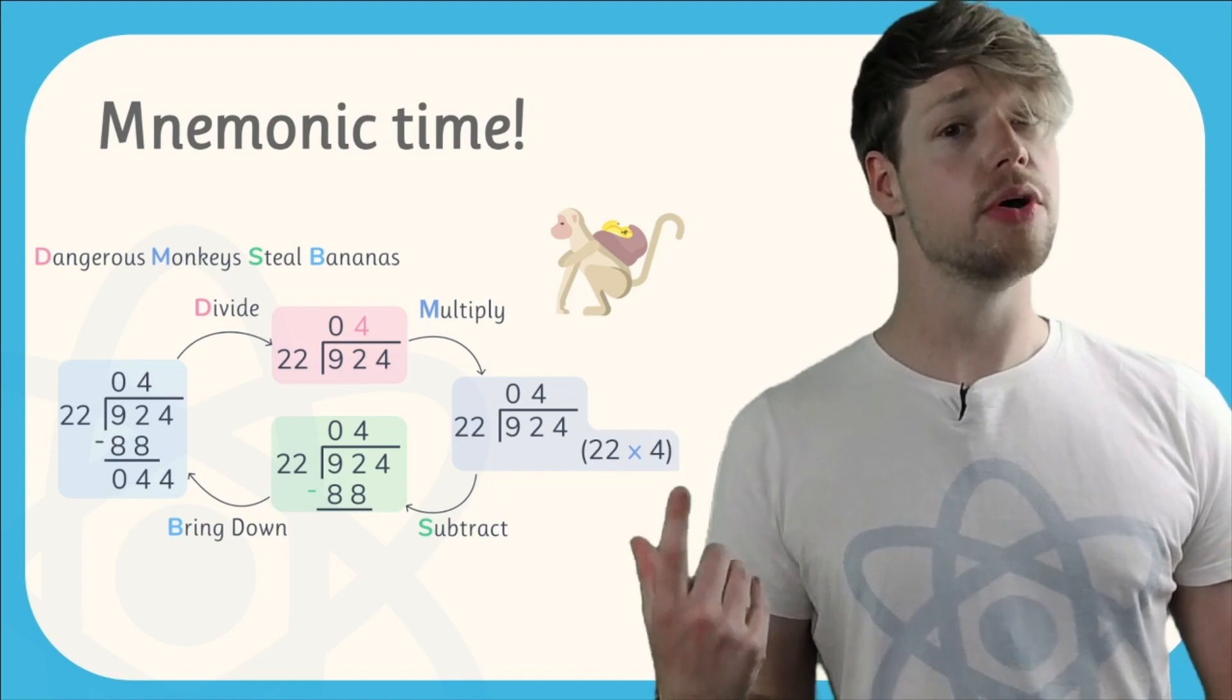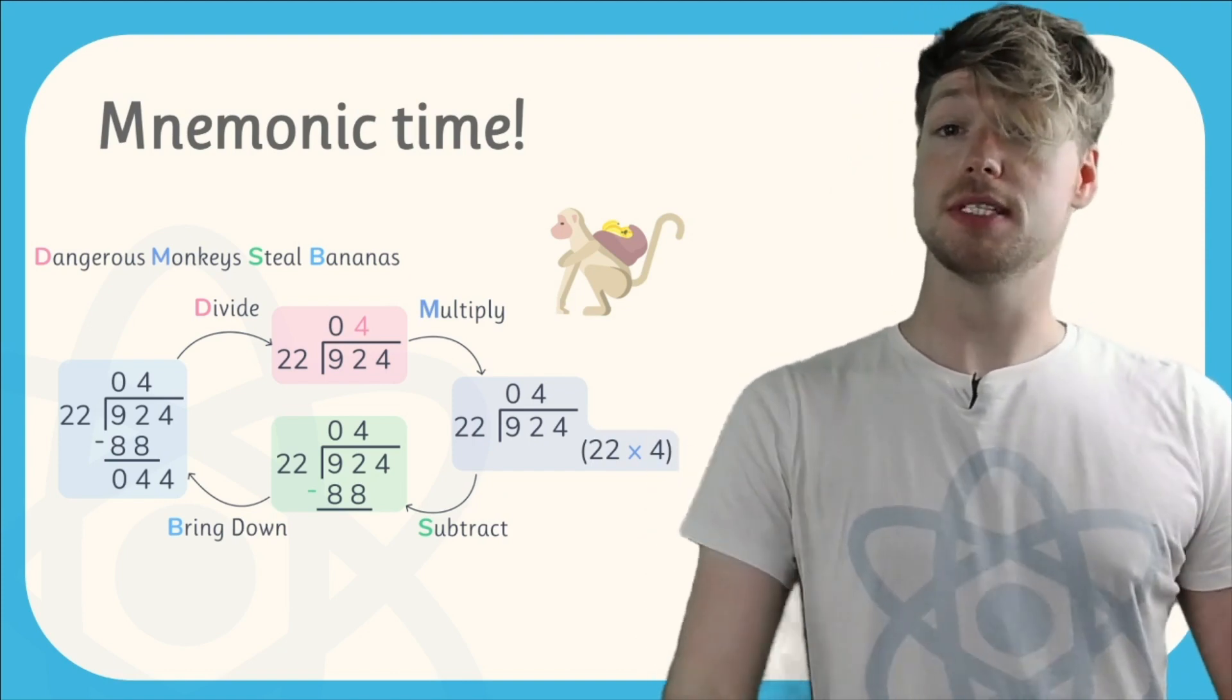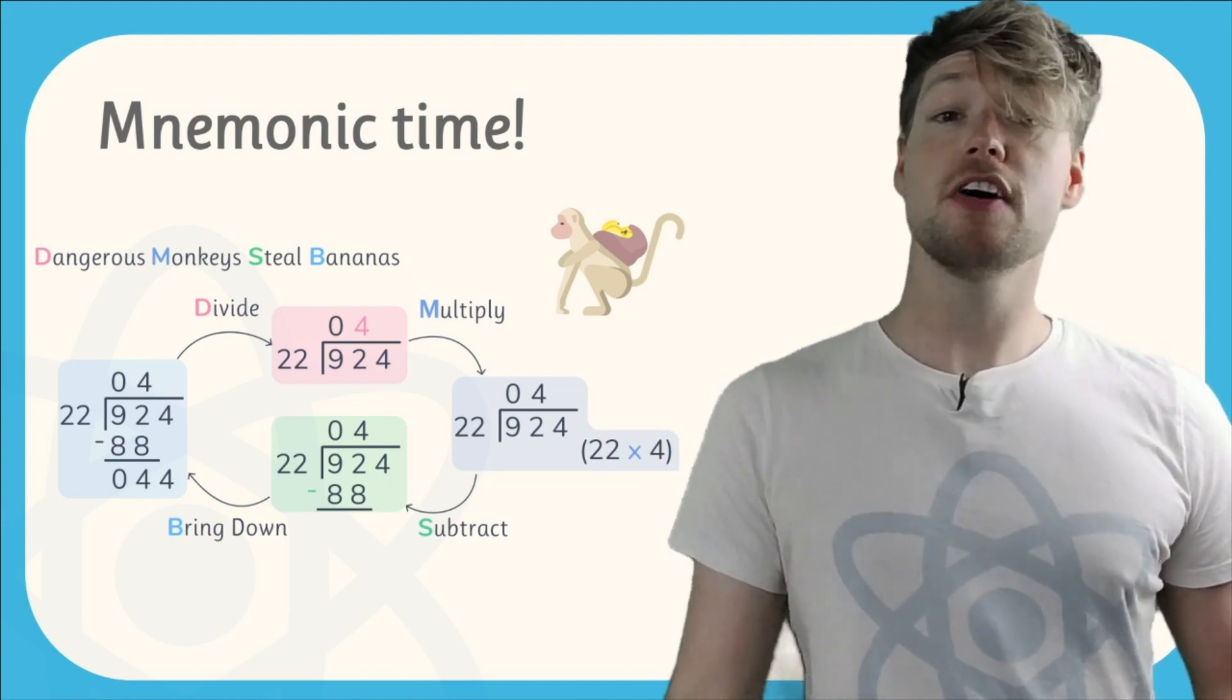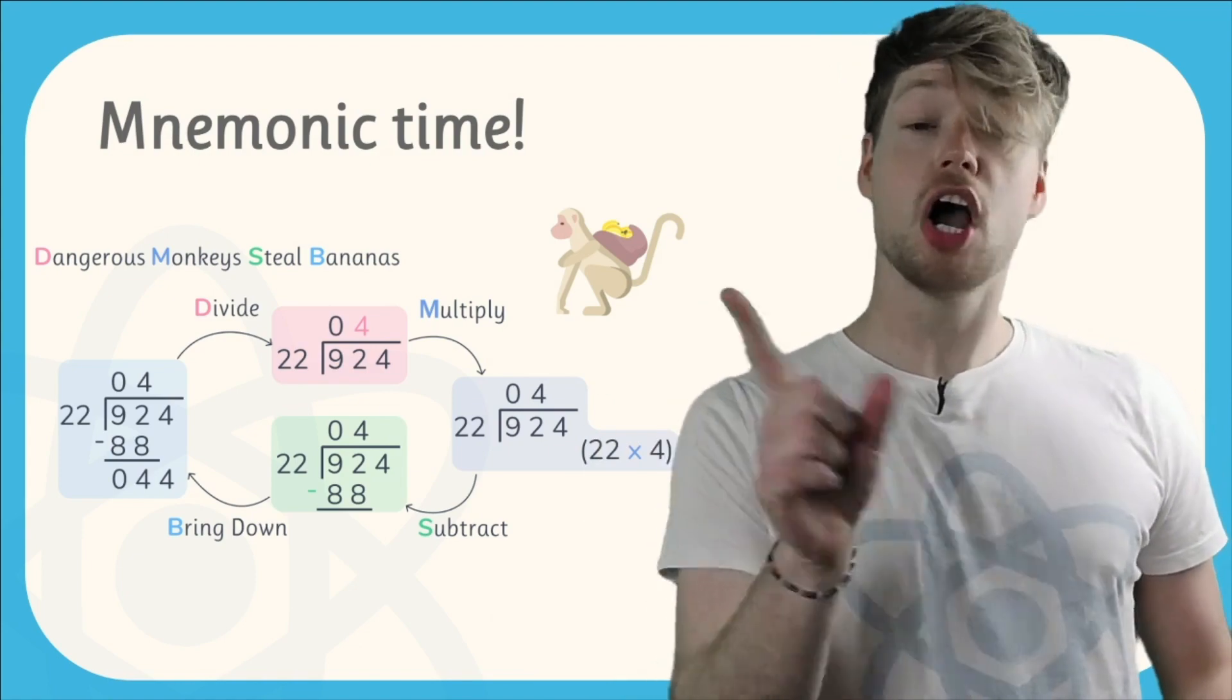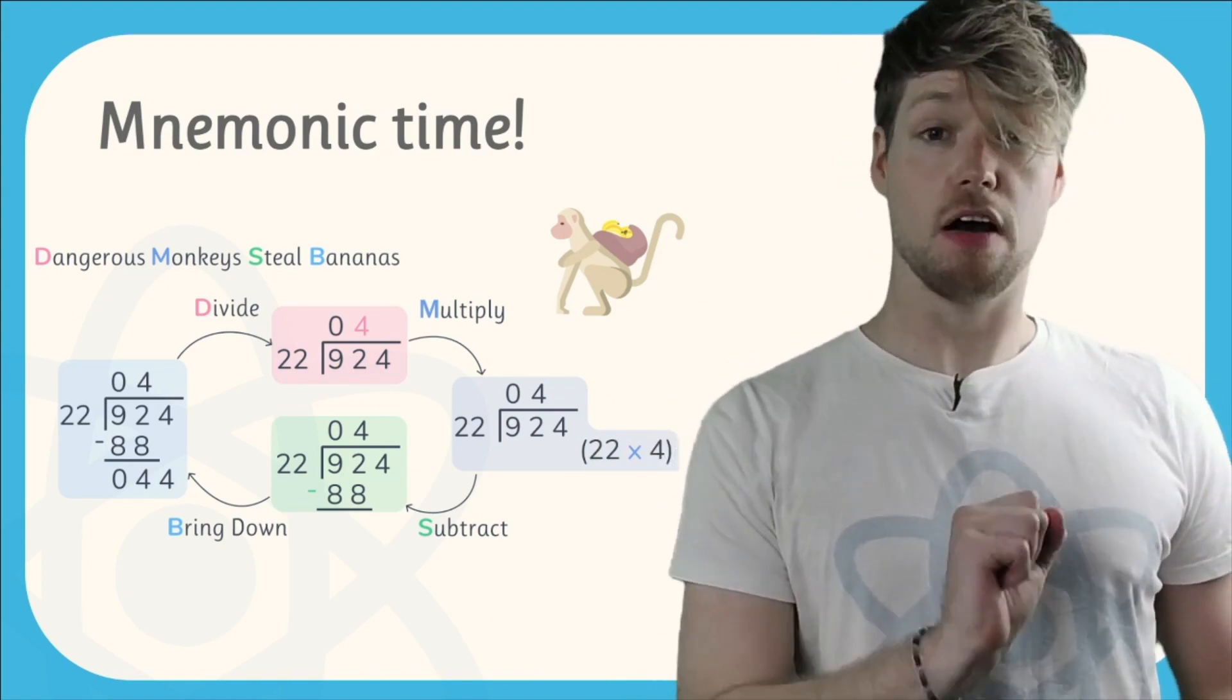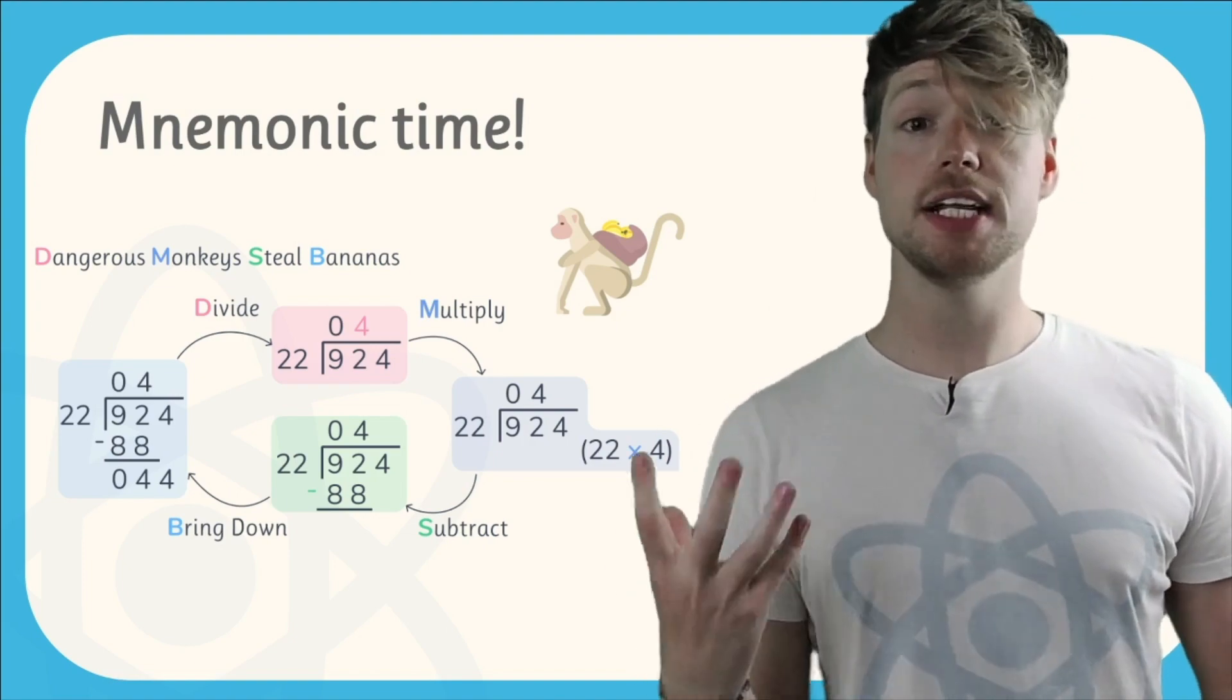Let's talk through this example on the screen quickly so you can see what I mean. Let's say we have to do 924 divided by 22. The first thing we do is we divide that first digit 9 by 22. We can't do that, 9 is not big enough. So we combine the first two digits together and we need to do 92 divided by 22. That gives us 4.